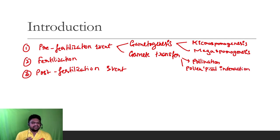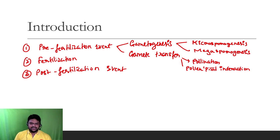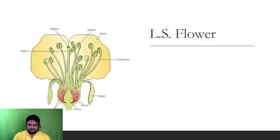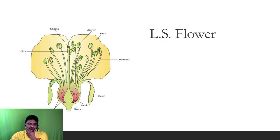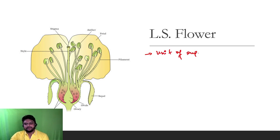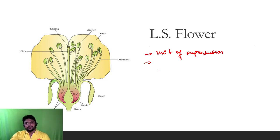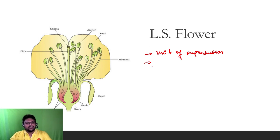This is the first part of the pre-fertilization event study. In the pre-fertilization event, we start with the flower. We call the flower the unit of reproduction — in our daily life, we refer to the flower as the unit of reproduction.